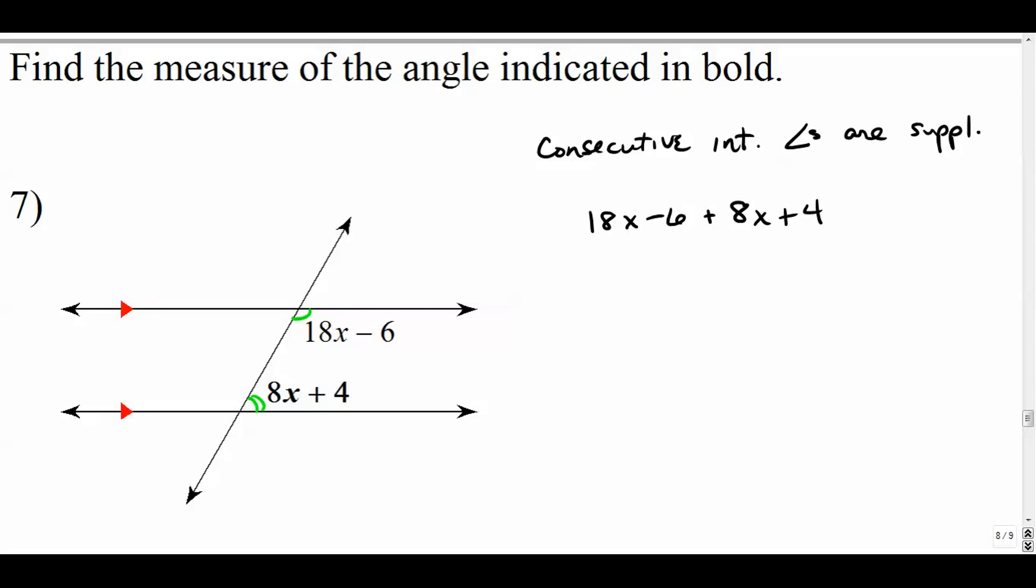Plus 8x plus 4 equals 180. Combine like terms on the left hand side, we get 26x. Combine constants minus 2 equals 180. Add 2 to both sides. That's 182. And we're just going to divide 182 by 26. So let's see if I can kind of figure this out. What's 26 times 6? That's not going to be right. Let's how about 26 times 7. That's 6 times 7 is 42. 14 plus 4 is 182. Yeah, so 182 divided by 26 is indeed 7.